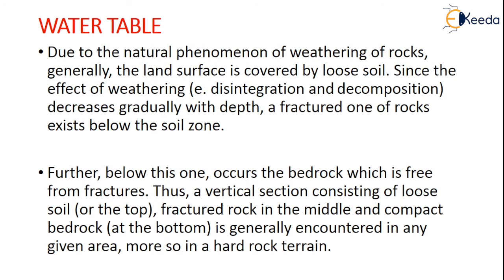What do you mean by water table? Due to the natural phenomenon of weathering of rocks, the land surface is generally covered by very loose soil. The effect of weathering due to disintegration and deposition decreases gradually with depth. A fractured rock is one that exists below the soil zone, and below this fractured zone there is a bedrock which is free from fractures. So there is a vertical section consisting of loose soil on top, fractured rock in the middle, and compact bedrock at the bottom, generally encountered in any given area, more so in a hard rock terrain.